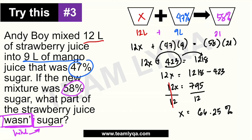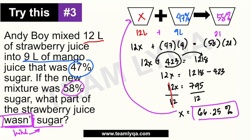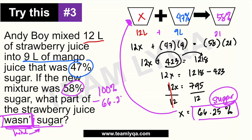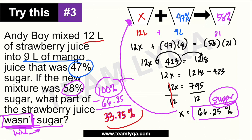Now, ito na yung catch dito. Itong 66.25, yan ay yung percentage nung first solution — yung percentage ng sugar content niya. Ito yung laman na sugar. Pero ang inahanap is kung ano yung was not sugar. So anong gagawin natin? Gagawin natin 100% minus yung 66.25%. Kasi kung ito yung total ng lahat ng laman nung strawberry juice at 66.25 ang asukal, ang matitira lang dyan — yun lang yung hindi asukal — which is 33.75%. So anong tamang sagot? Ang sagot ay 33.75% at hindi 66.25%.